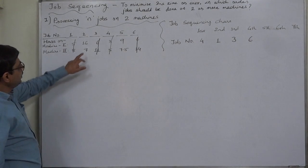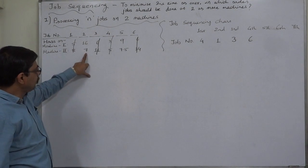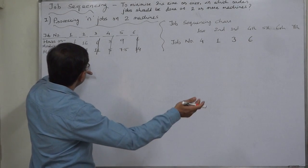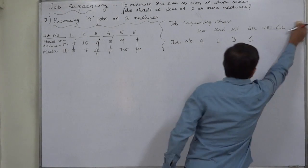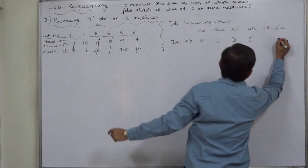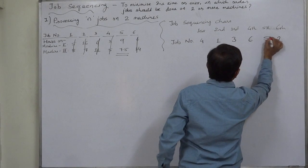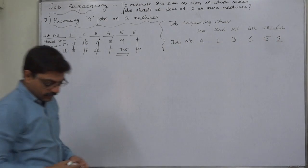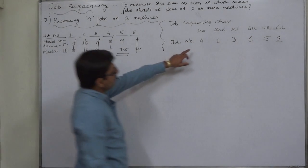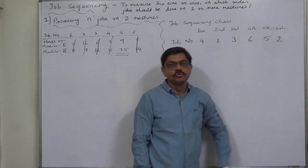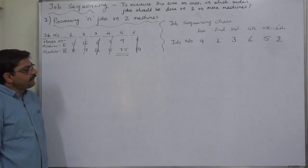Now for the remaining two jobs, the minimum time is seven, and that is on machine two. So it is going to be placed on the right hand side — that is job two. And the last job is five. So ultimately our preferred sequence is: four, one, three, six, five, and two. That is our preference order, or our preferred job sequencing.